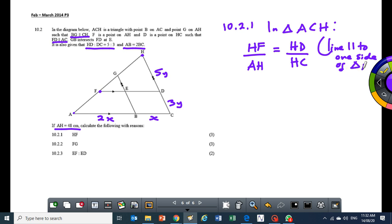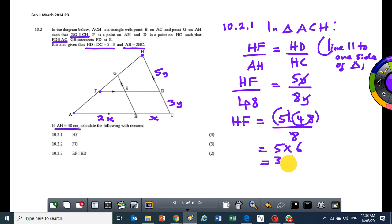What this means is I can now substitute and say HF is the one I want. What is AH? AH is given as 48. My HD over HC is equal to my HD is going to be 5Y and my HC is going to be 8Y. But these two will cancel out, so my HF will be equal to 5 times 48 divided by 8, and that will give you 5 times 6, and that will be 30 centimeters.